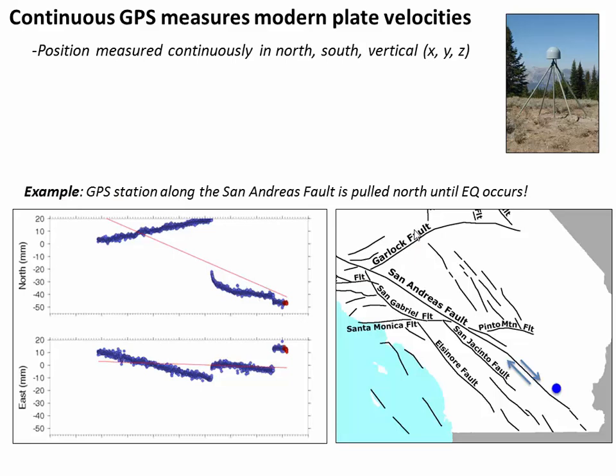So I just told you that GPS has been a revolution for measuring plate motions, and I'll just show you one example here. This is from a GPS station that sits just east of the San Andreas Fault, and it's been measuring the velocity of this location for many years. What you can see is that over time the station was being pulled slowly northward along with the California crust. However, when the San Andreas Fault ruptured, the plate suddenly moved southward very rapidly during the earthquake, and that co-seismic motion is actually recorded by the GPS unit. Pretty amazing.